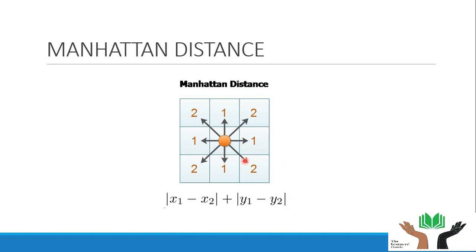Here is an example of Manhattan distance. Let us consider a rook in a chess game. As you all know, the rook always travels in straight directions and cannot travel diagonally. So if a rook has to go diagonally, it has to cover the path in two moves. We can see it covers diagonal distance in two moves while the straight ones are in one move.